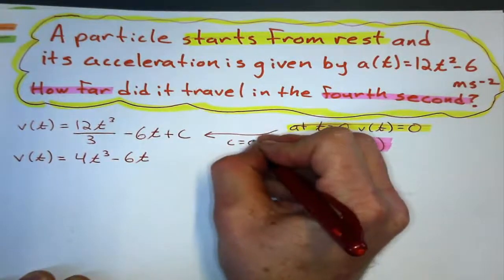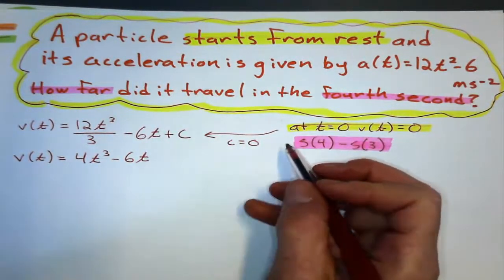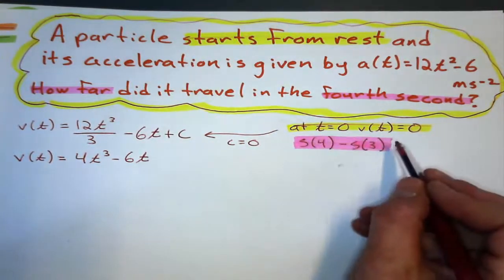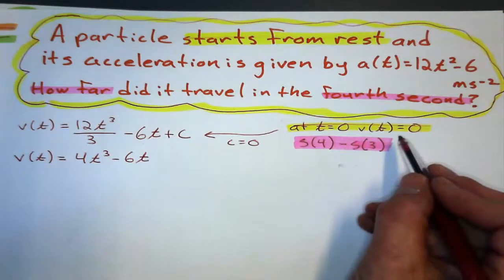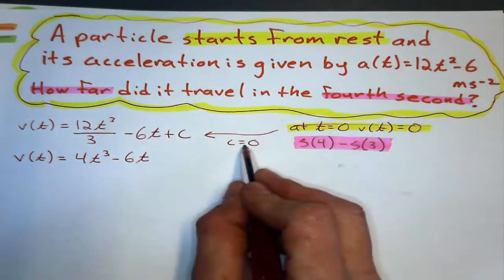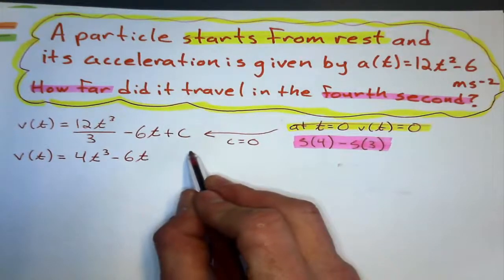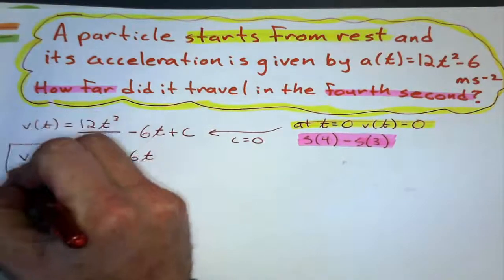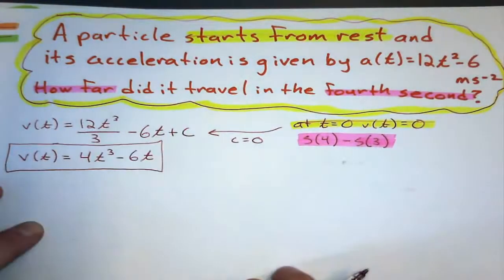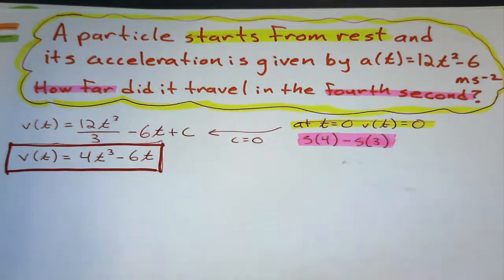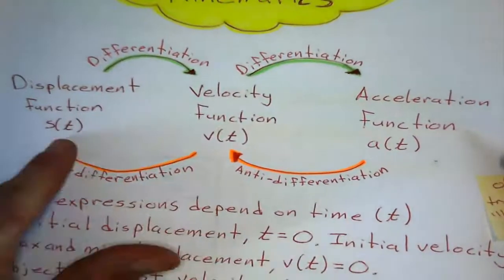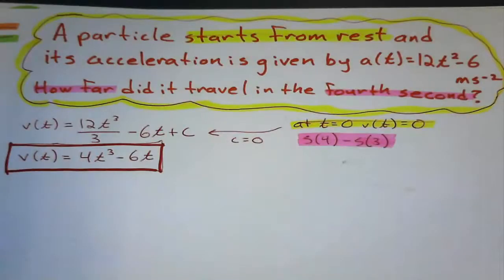Here's where the initial condition helps — because my constant is going to equal zero if I'm starting from rest at t equals zero. If the particle starts motionless, the constant of integration for velocity will be zero, so I don't need to put anything there. I've got the velocity function.